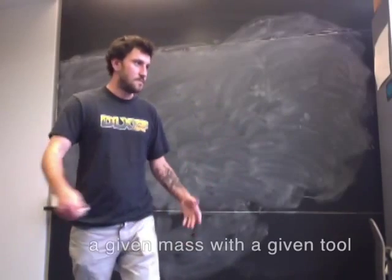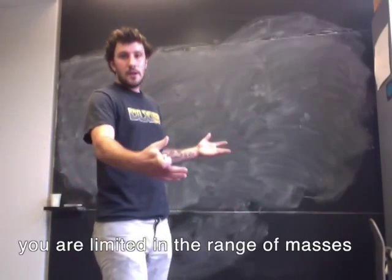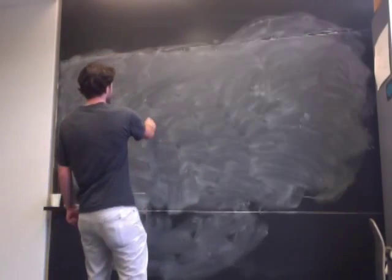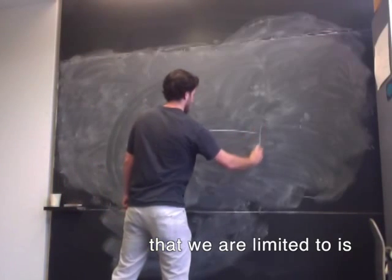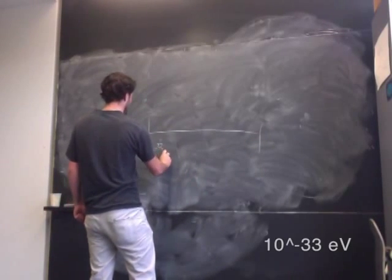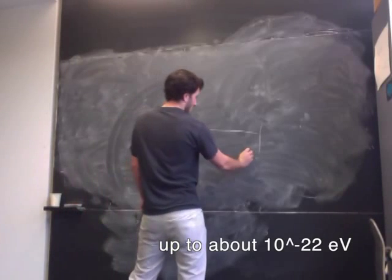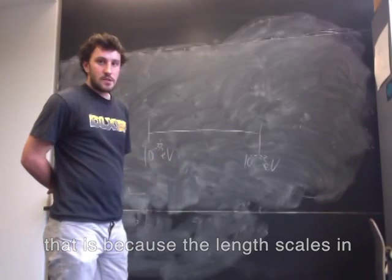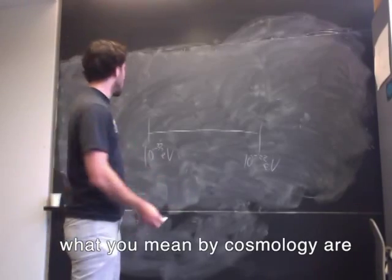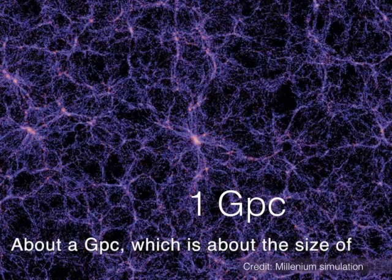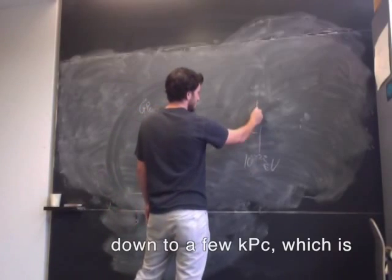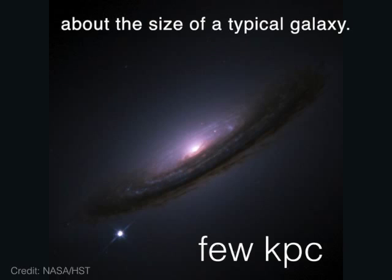Constraining particles of a given mass with a given tool, you're limited in the range of masses you can look at by what that tool is. And in cosmology, the range of masses that we're looking into is 10 to the minus 33 electron volts up to about 10 to the minus 22 electron volts. That's because the length scales in cosmology that really define what you mean by cosmology are about a gigaparsec, which is about the size of the visible universe, down to a few kiloparsecs, which is about the size of a typical galaxy.